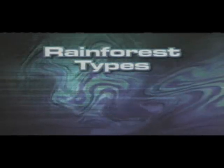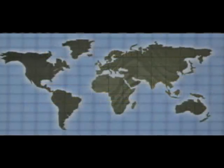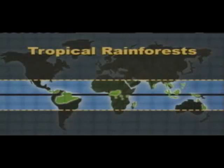There are two primary types of rainforests: tropical and temperate. Most prevalent are the tropical rainforests, covering almost 6% of the Earth's surface. They're home to over half of the species of plants and animals found on this planet. Tropical rainforests can be found in the tropics, all around the world along the equator between the Tropic of Cancer and the Tropic of Capricorn.